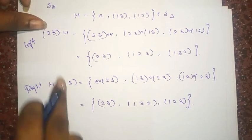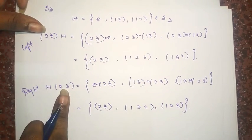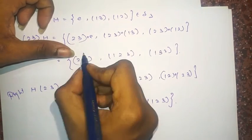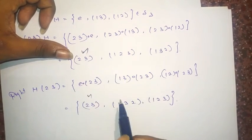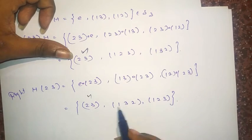So if you have seen these two left and right cosets at (2,3), these two are the same. (1,2,3) is not equal to (1,3,2).